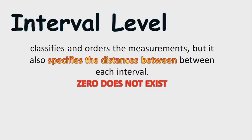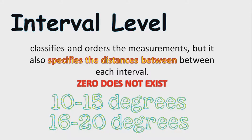Next: interval level. Interval level classifies and orders the measurements, but also specifies the distances between each interval. Zero does not meaningfully exist here. For example, 10 to 15 degrees, 16 to 20 degrees — there is a measurable distance between those intervals.